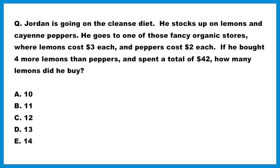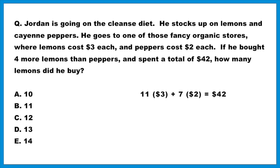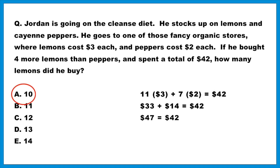So give it a shot — test choice B, press pause, and see what happens. Assuming that the answer is B, that means 11 would represent the lemons. And remember, there are four more lemons than peppers, so 11 lemons mean we have 7 peppers. Testing that would be 11 lemons times $3 each plus 7 peppers times $2 each — we want that to equal $42. Working that out: 33 plus 14 is 47, not 42. Not only is B not the answer, but we got a number that was too high. That means the answer must be A — you don't even have to test it.